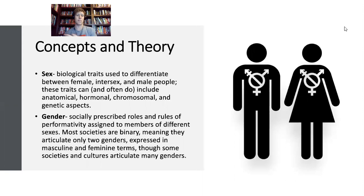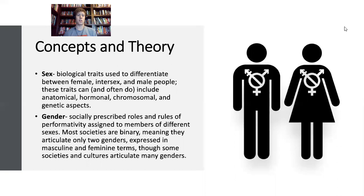Depending on how someone constructs their definition of sex, these definitions can depend on a couple of aspects: anatomy, hormones, chromosomes, and genetics. It's also worth noting that sex isn't binary. A lot of times people articulate that there are only men and women, but that isn't the case — there are also intersex people, asexual people, and an entire spectrum of biological sex that is often reduced to a dichotomy by the medical profession.